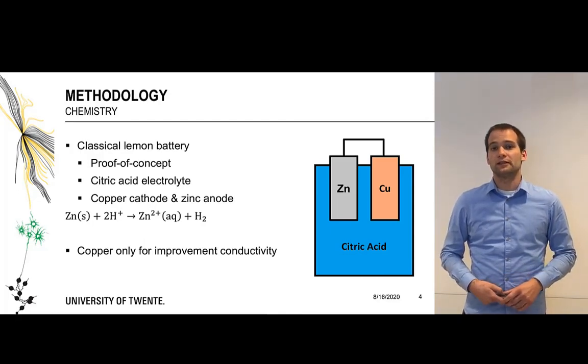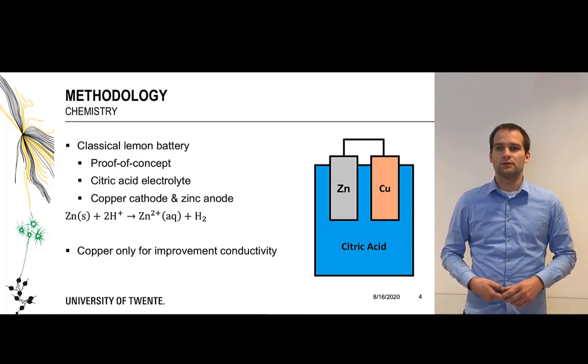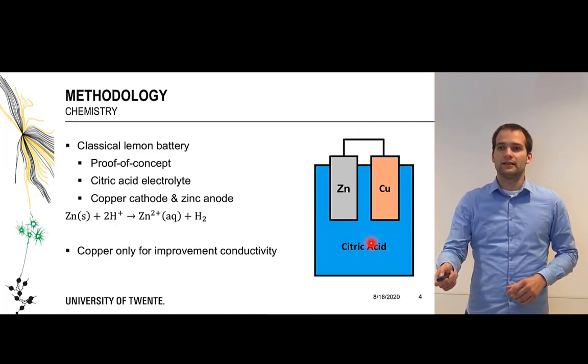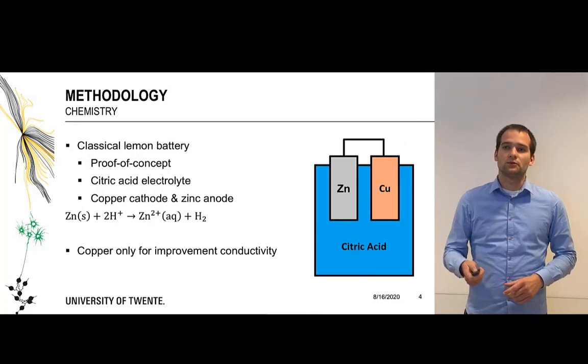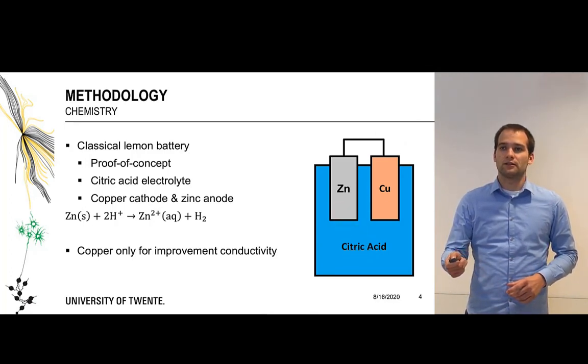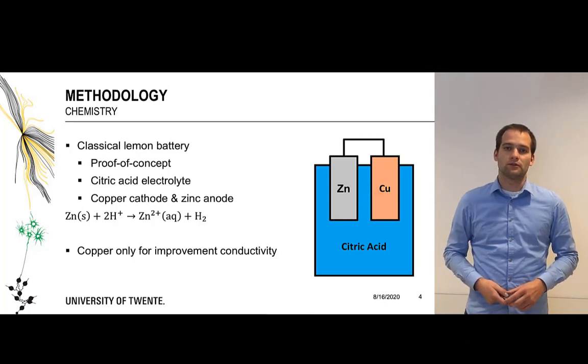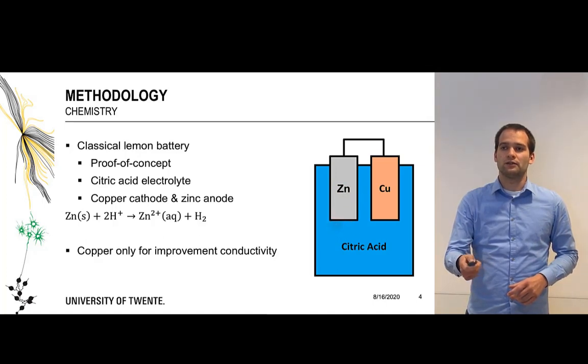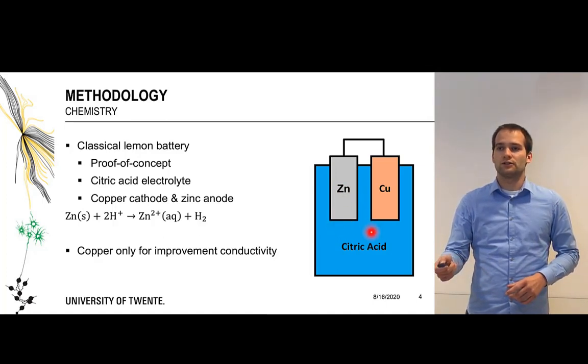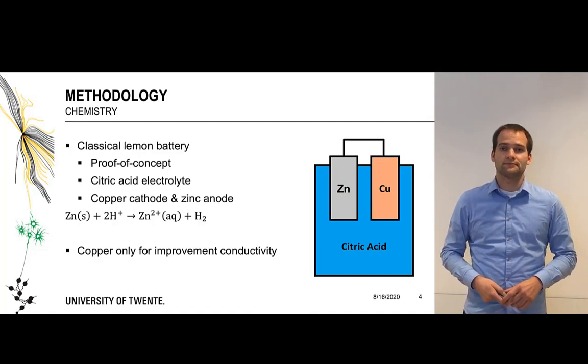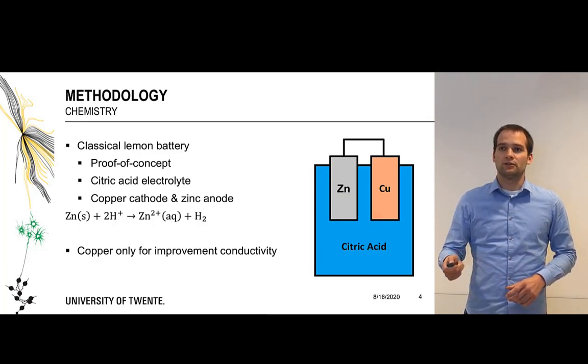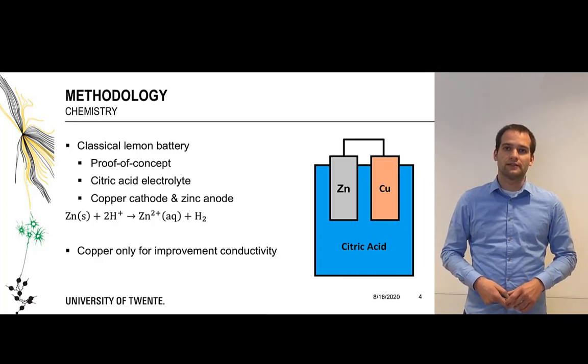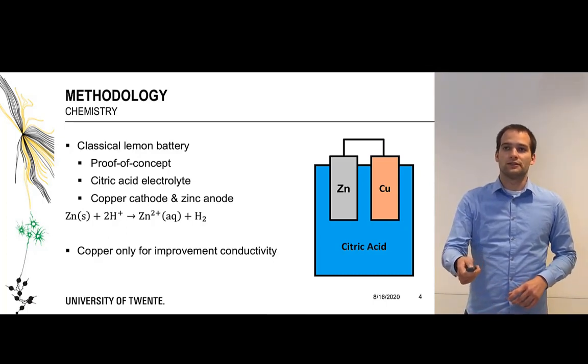The battery chemistry is taken quite simple. We have taken a classical lemon battery as a proof of concept where we have citric acid as the electrolyte in combination with the zinc electrode as the anode and copper electrode as the cathode where the zinc reduces with hydrogen ions on the anode and the hydrogen oxidizes on the copper cathode where the copper is actually only included for improvement of conductivity in this case and does not react itself.